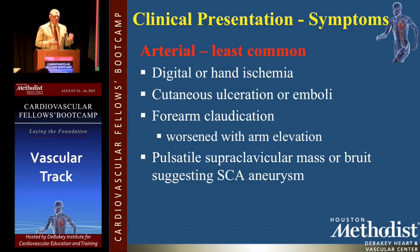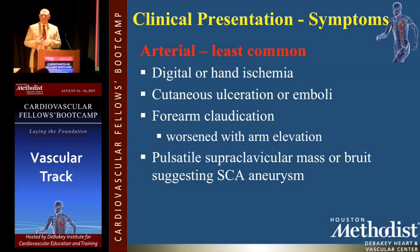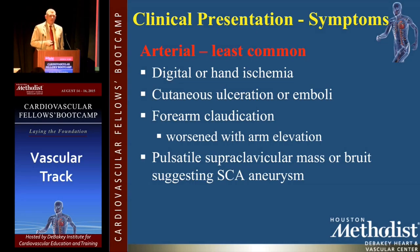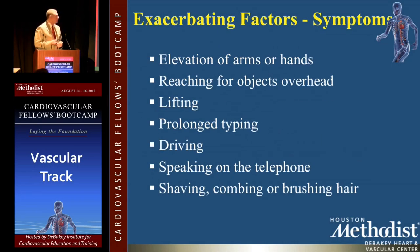Arterial — digital or hand ischemia, emboli, petechiae, ulcerations, forearm claudication. All the symptoms that present have tests to assess whether or not this is occurring with exercise. A pulsatile supraclavicular mass suggesting a subclavian artery aneurysm distal to the trauma or the stenosis.